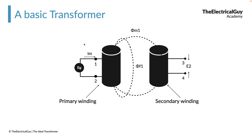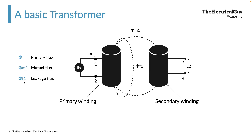Initially when we only had one coil, there was only one flux phi m. Now with two coils, we have two fluxes. Out of the total flux phi produced by the primary, some portion gets linked with the secondary winding — that is called the mutual flux, given by phi m1. For example, if the primary winding produces 100 flux, only 80 might get linked with the secondary. The remaining flux does not link with the secondary and is called leakage flux, given by phi f1. So 20 is leakage flux, 80 is mutual flux, and the total of these two gives us the flux produced by the primary winding.